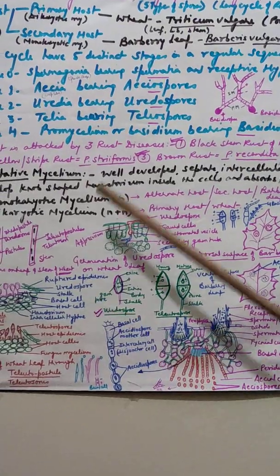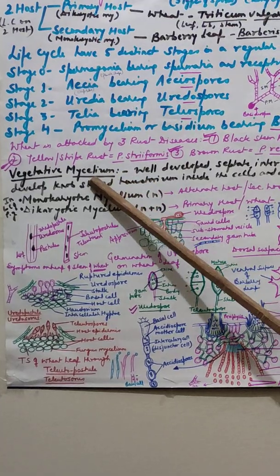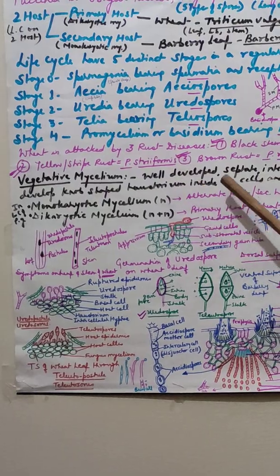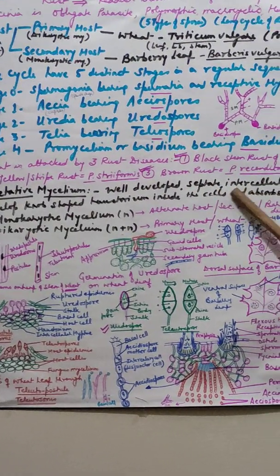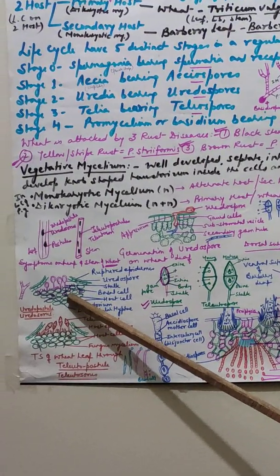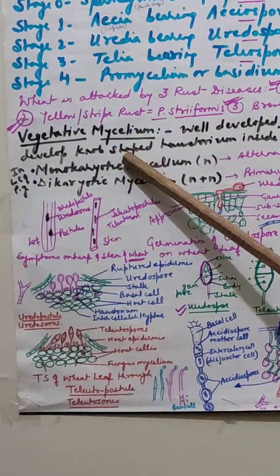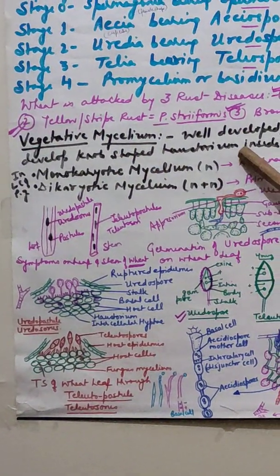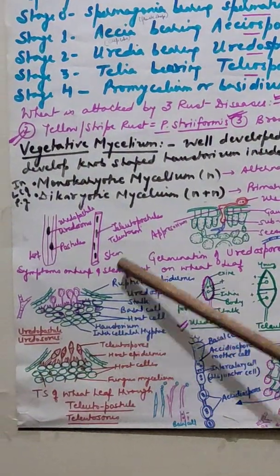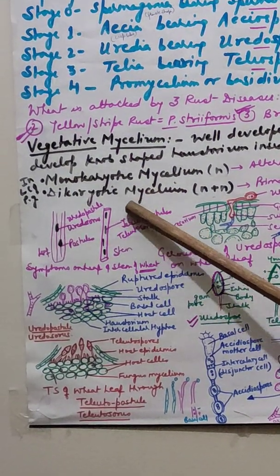Here we will discuss only the life cycle of Paxcinia graminis tritici. The vegetative mycelium is well developed, septate, and intercellular — meaning the mycelium creeps between the host cells and forms haustoria for procuring nutrition from the host cells. The haustoria are knob-shaped and absorb nutrition from the host cells. In Paxcinia, two types of mycelium are formed: monokaryotic and dikaryotic.